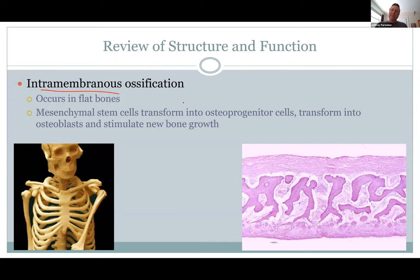The other form of bone formation is intramembranous, which means you have two membranes and bone forms between them. These are the flat bones of your skull, and your clavicle is like this. It's a different way of bone formation where the bone forms between these membranes.